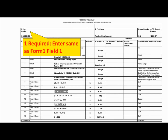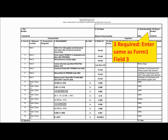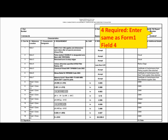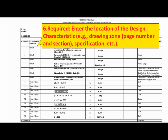In Form 3: Fields 1 through 4 are required — please enter the same information as Form 1 Fields 1 through 4. Field 5 is required — please enter a unique number for each design characteristic; these should match what is on the balloon drawing. Field 6 is required — please enter the location of the design characteristic, for example drawing zone, page number, section, specification, etc.